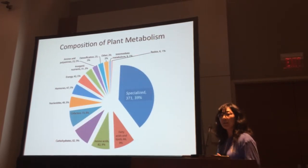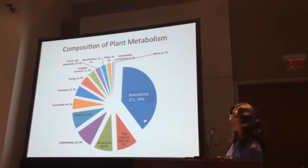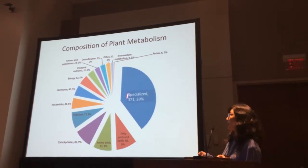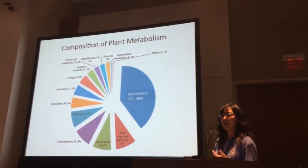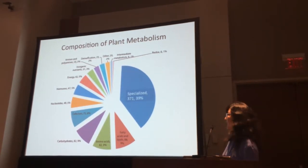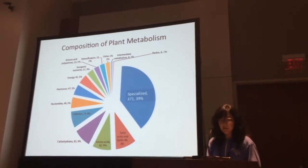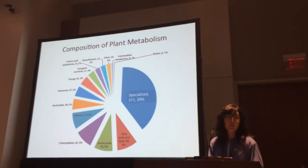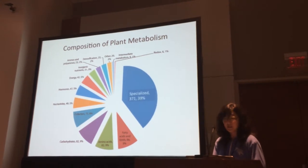We've categorized these reactions and pathways into 13 domains of metabolism. Specialized metabolism — commonly known as secondary metabolism, though the plant metabolic community has adopted the phrase 'specialized metabolism' — takes a big chunk. The remaining 12 domains are primary metabolism, things like carbohydrates, amino acids, fatty acids, and so on.